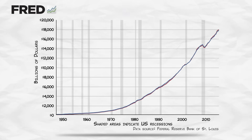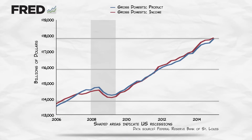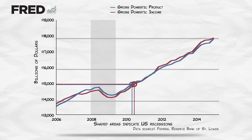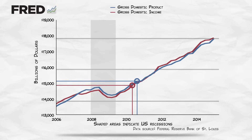Let's take a look at the FRED database. Here we graph GDP and GDI — hard to see a difference, right? But if we zoom in a little bit, we can see that they're not perfectly identical. And in a recession, economists often look at both figures, since one of them might sometimes give us an earlier or more accurate picture of the economic situation.